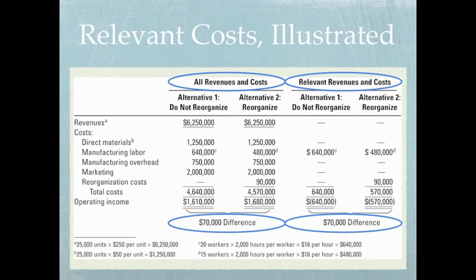So we're getting the same $70,000 differential by listing all the information as we do by listing only the relevant information. That said, if management comes to you as the cost accountant and wants you to create this decision-making tool, they may ask for all the information — so you may need to supply the first two columns. However, in some cases they just want a decision, so to save time and money you would only consider the relevant information.